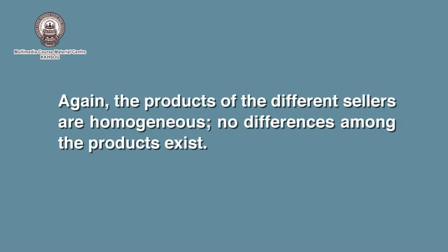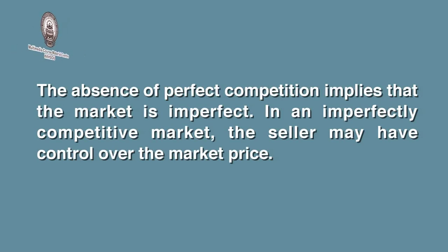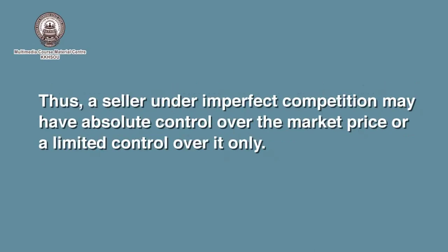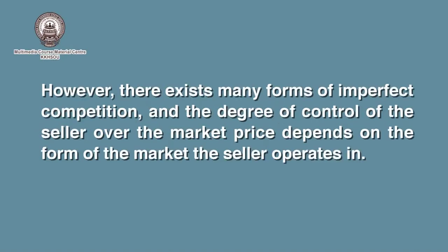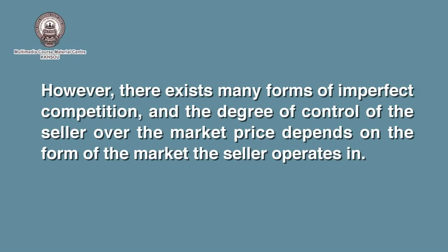The products of different sellers are homogenous — no differences among the products exist. The absence of perfect competition implies that the market is imperfect. In an imperfectly competitive market, the seller may have control over the market price. Thus, a seller under imperfect competition may have absolute or limited control over the market price. This basically depends on the type of market, and the degree of control depends on the form of market the seller operates in.